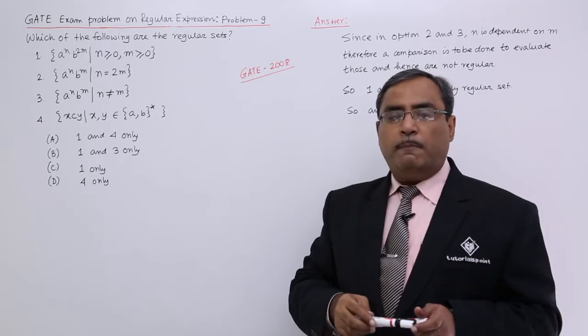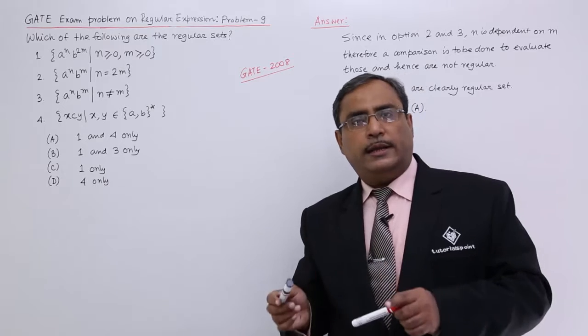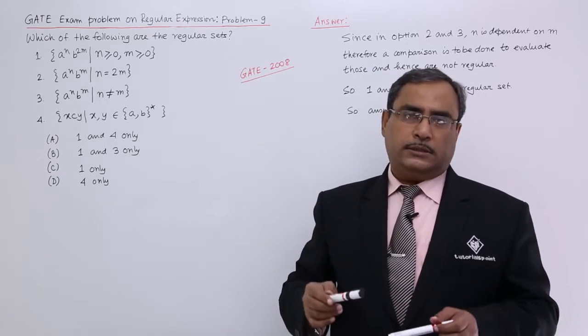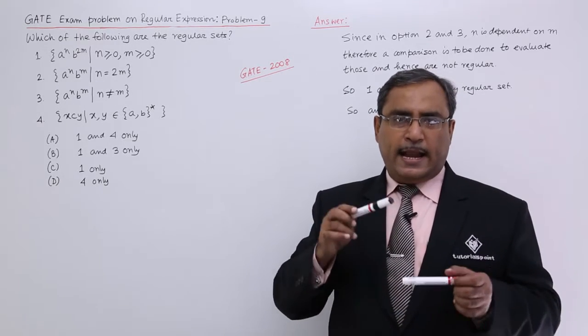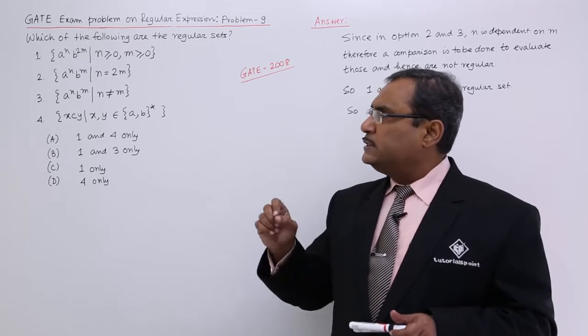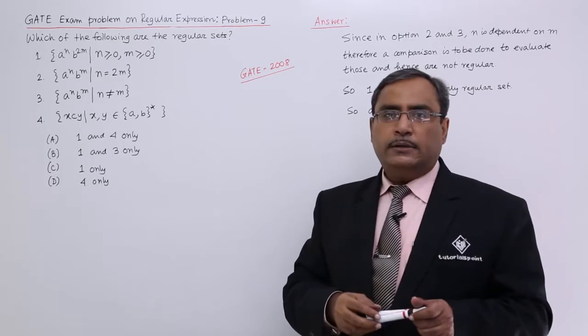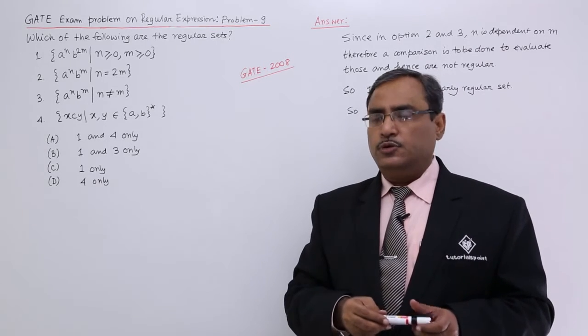It is not mandatory that the number of a should be lesser than or greater than number of b, or some other relations between n and m has not been mentioned. That means, always I can form strings in this particular format using our regular expression. So that is not a problem.